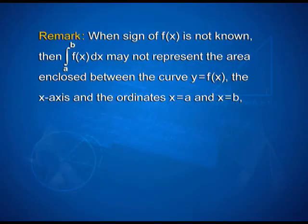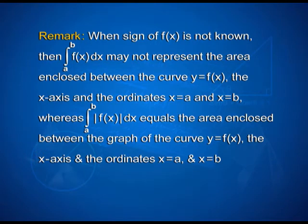Here is an important remark. It may be noted that when the sign of f(x) is not known, then ∫a to b f(x)dx may not represent the area enclosed between the curve y = f(x), the x-axis, and the ordinates x = a and x = b. Whereas ∫a to b |f(x)|dx equals the area enclosed between the graph of the curve y = f(x), the x-axis, and the ordinates x = a and x = b.